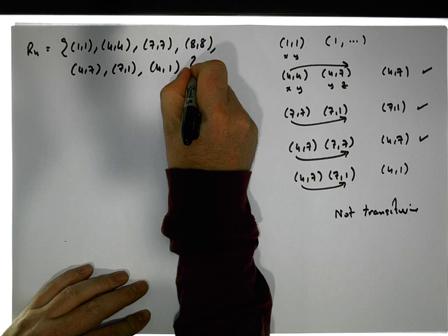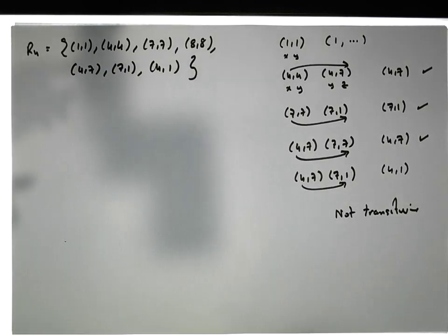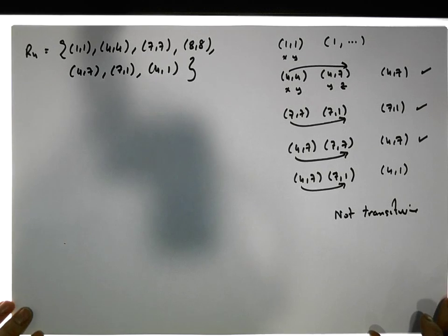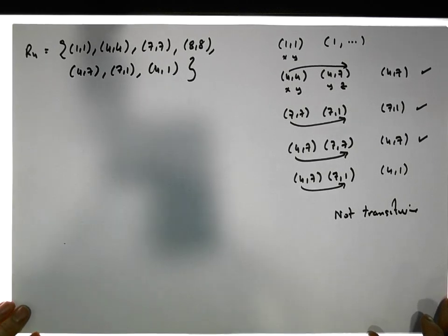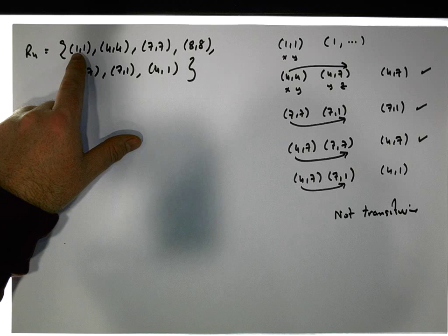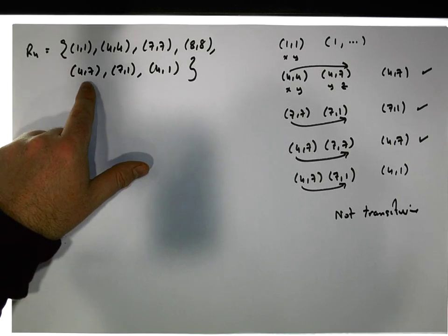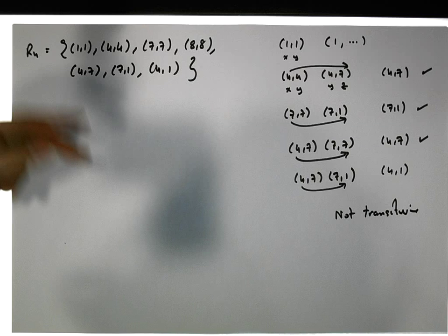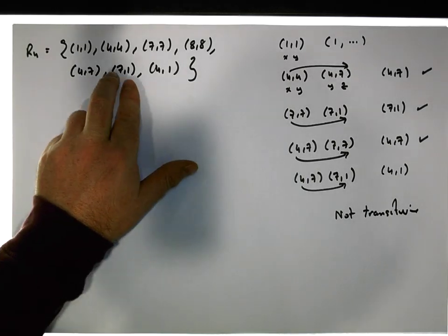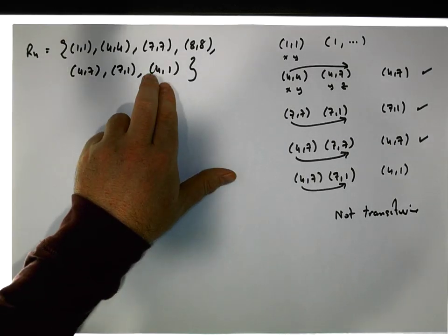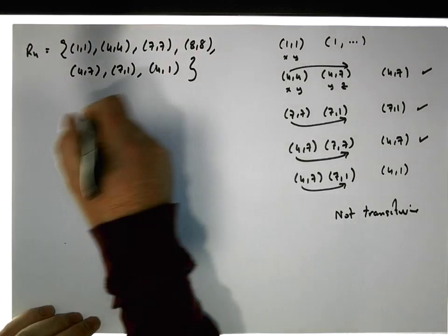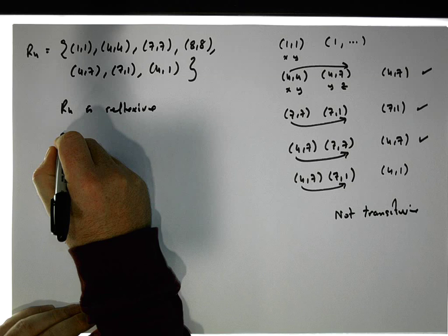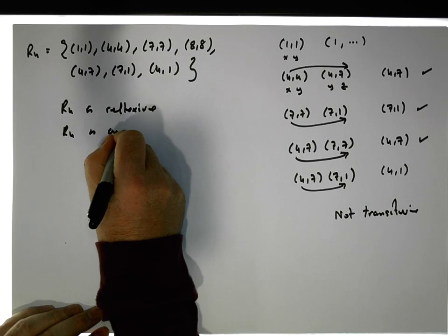And now the question is, is this relation here, is it still reflexive? Yes, it is. Is it anti-symmetric? Anti-symmetric means for all the ordered pairs where the A is not equal to the B. In other words, this, this, and this. Are there couples in there when we reverse them? Is seven, four in there? No, it's not. Is one, seven in there? No, it's not. Is one, four in here? No, it's not. So R4 is reflexive and R4 is anti-symmetric.